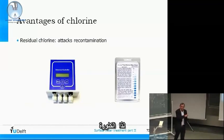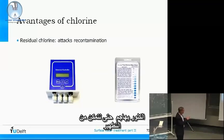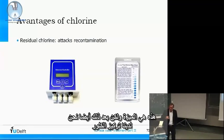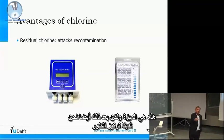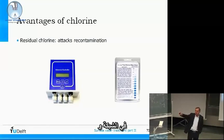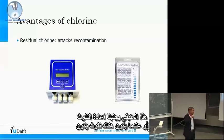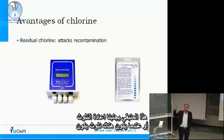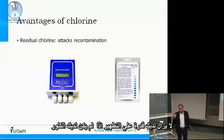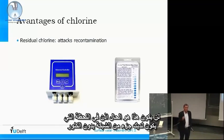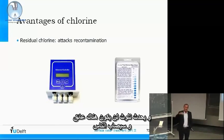Chlorination disinfects — that is the advantage. We also have a residual chlorine concentration in the network, and that residual avoids recontamination. Or when there is recontamination, you still have a disinfection capacity. When you don't have chlorine, that is not the case. So the moment you have a part of the network without chlorine and there is recontamination, there is no barrier, and people can get sick.